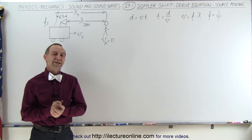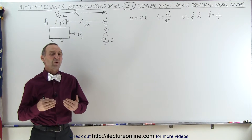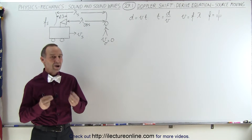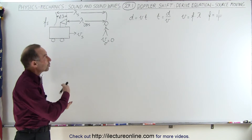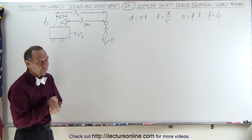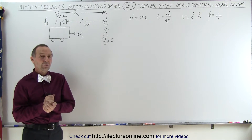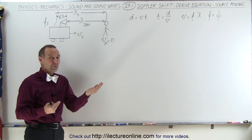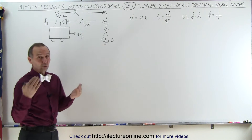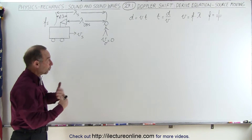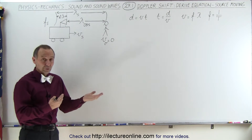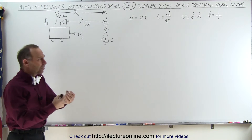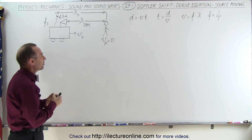Welcome to ElectronLine. We've had some requests from viewers to show them how to find or derive the equation of the Doppler shift when we have an observer and a source — when either the observer is moving, the source is moving, or both are moving. So how do you come up with an equation?